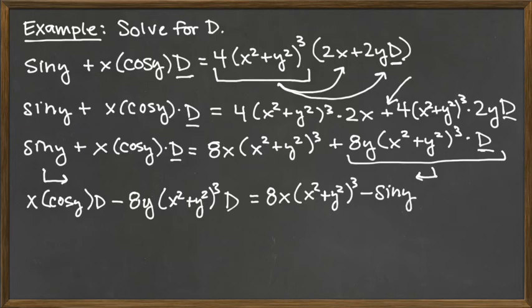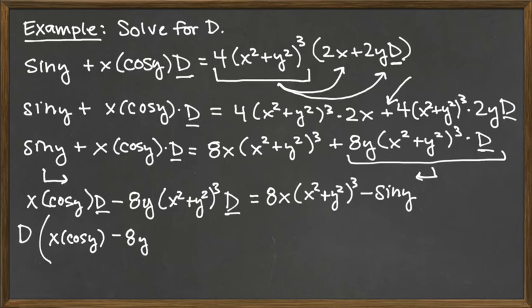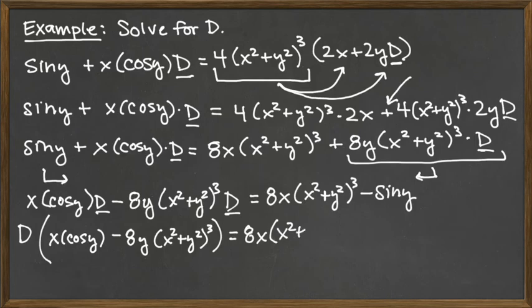Now we've got all terms that have the common factor of d on the left-hand side, so I'm going to pull that common factor out. So I've got d times — in a big set of parentheses — x times cosine of y minus 8y times x squared plus y squared raised to the third power. And on the right-hand side I've got 8x times x squared plus y squared raised to the third power minus sine of y.